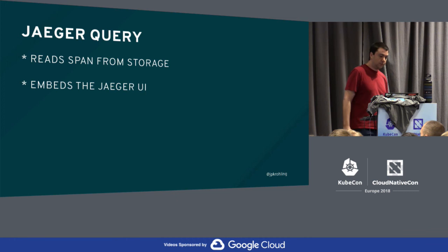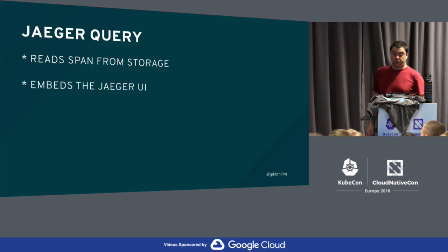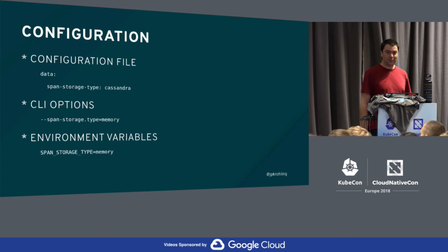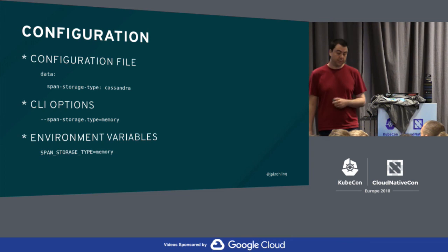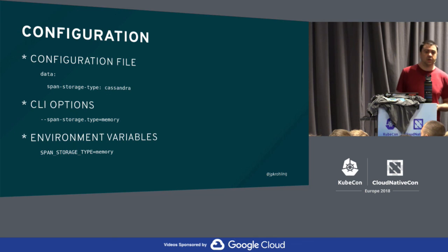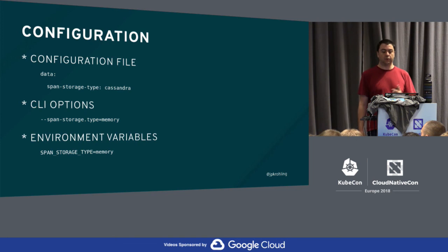Now this is a deep dive, so I need to tell you how to configure Jaeger. The main idea for the backend components follows the 12-factor apps principle — your application should be configurable through different sources of information: a configuration file, environment variables, and command-line interface switches or options.